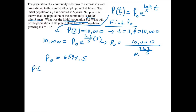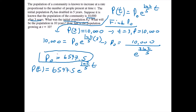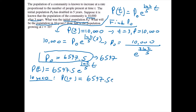Our function p of t is now 6,597.5 times e to the natural logarithm of 2 over 5 times t. We've found the initial population — this would be rounded down to 6,597 because we can't have half a person, but we'll keep the more precise version in our function. To find the population in 10 years, we evaluate p of 10, giving us 6,597.5 times e to the natural logarithm of 2 over 5 times 10, which equals approximately 26,390.